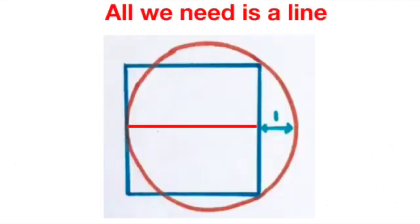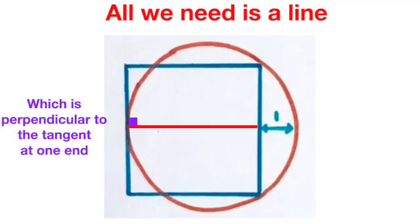With this important theorem in our toolkit, we can now proceed to solve the question. All we need to do is to draw in an additional line. This additional line should further be perpendicular to the point of the tangent where the circle meets our square.